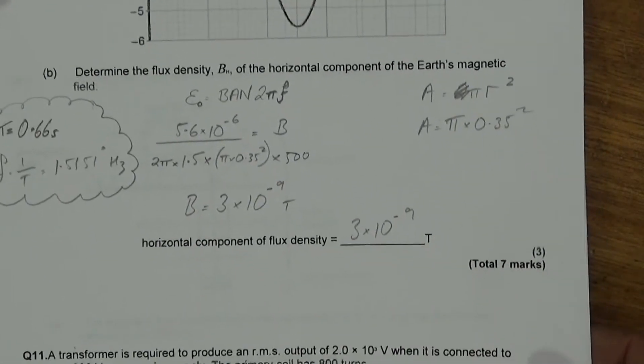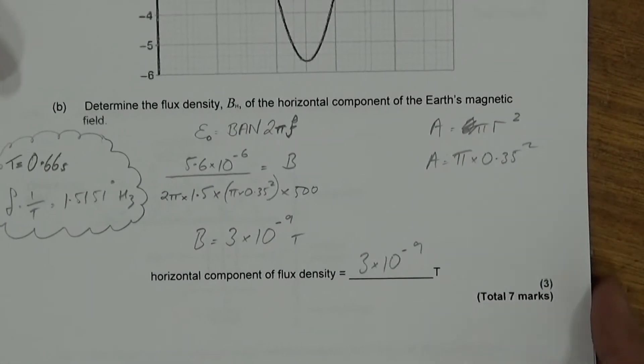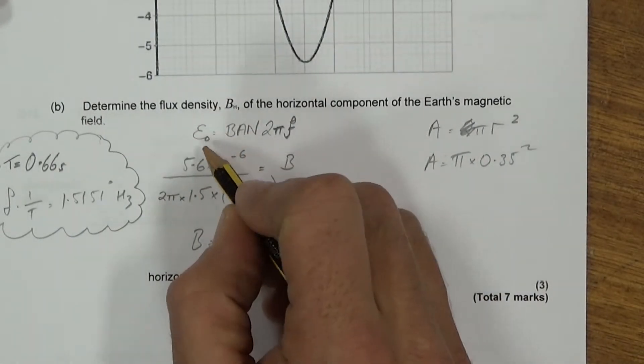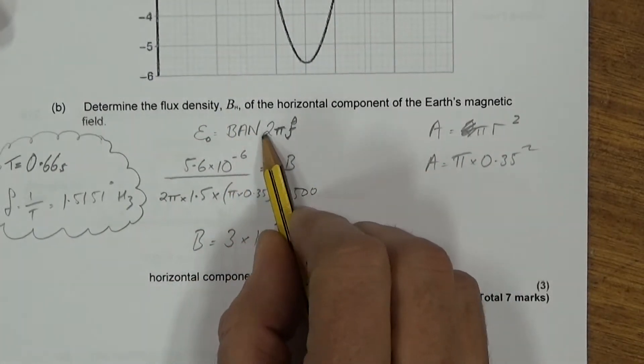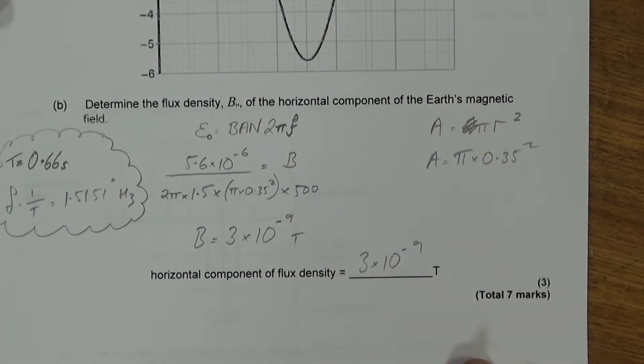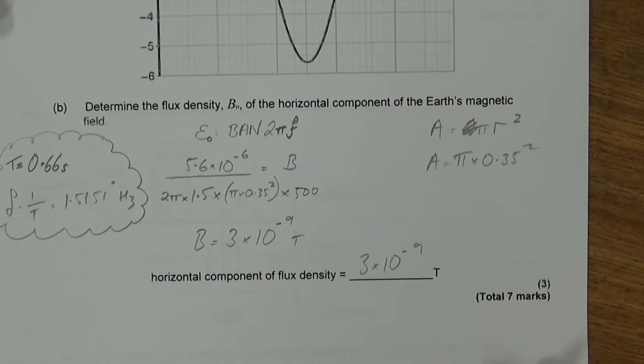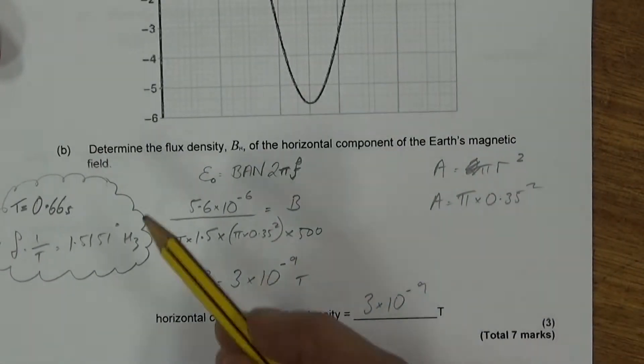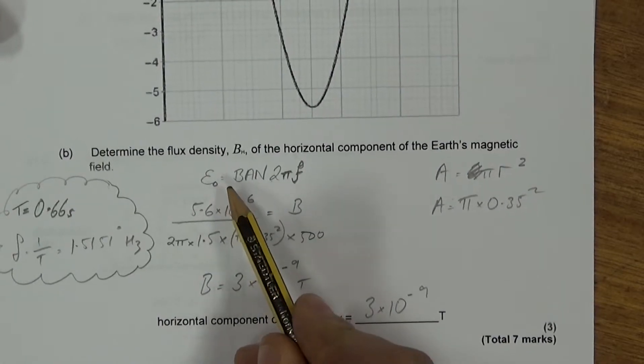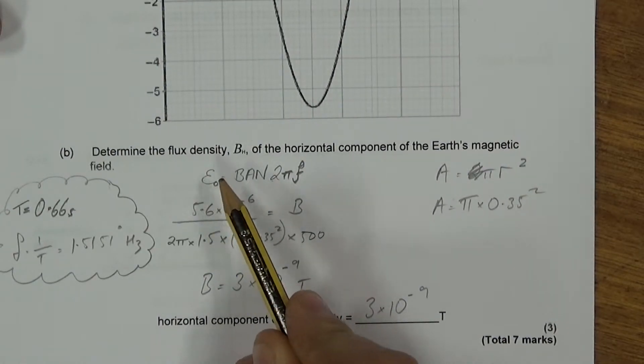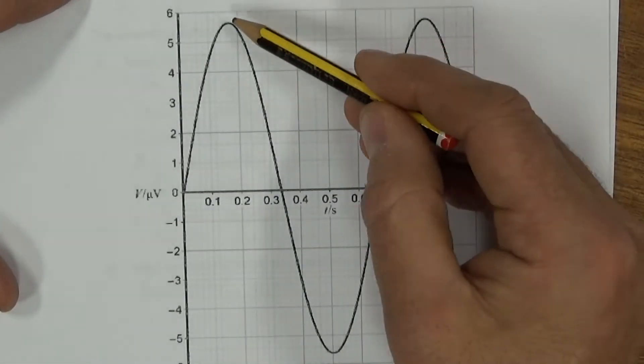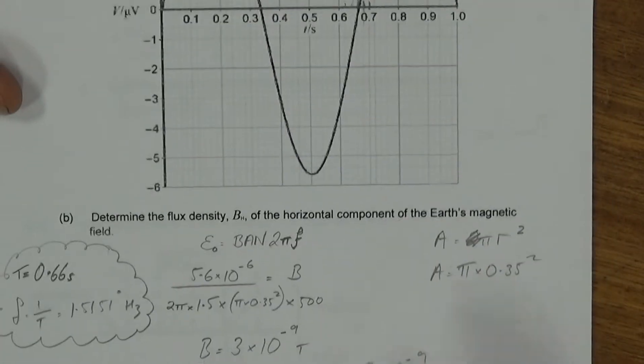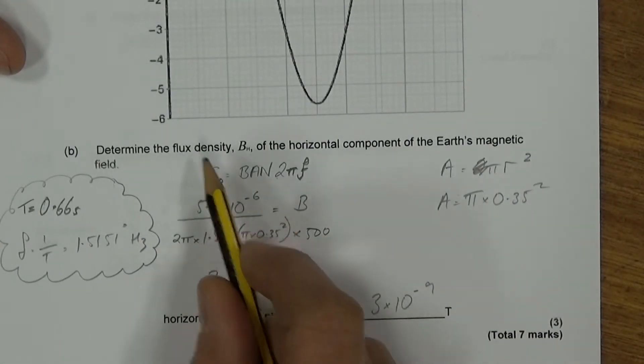And it asks us to determine the flux density of the horizontal component of the Earth's magnetic field. Well, we know that the maximum EMF is given by BAN2πF. And when it's rotating at 1.5 revolutions per second, that's 1.5 Hertz, basically. So we need to think, we need to first of all read off the graph to see what this maximum EMF is. And when you do look at the graph, you find it to be 5.6 microvolts. So that's where this has come from, the 5.6 microvolts, that's E0.